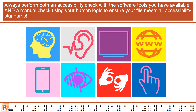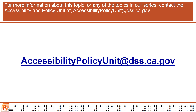Always perform both an accessibility check with the software tools you have available and a manual check using your human logic to ensure your file meets all accessibility standards. For more information about this topic, or any of the topics in our series, contact the Accessibility and Policy Unit at accessibilitypolicyunit@dss.ca.gov.